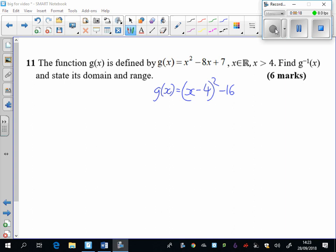x minus 4 all squared, minus 16, add 7. So my g function is x minus 4 all squared, minus 9.